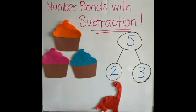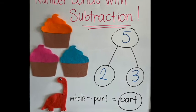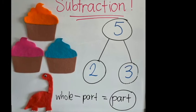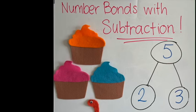Another way to remember that is: whole take away part equals part. Five take away two equals three. Our number bond shows five cupcakes take away two cupcakes equals three cupcakes.